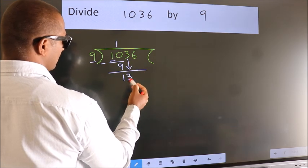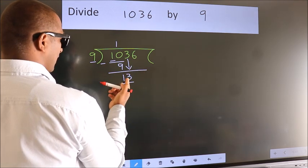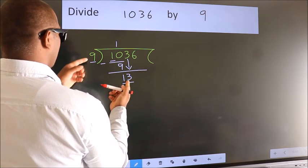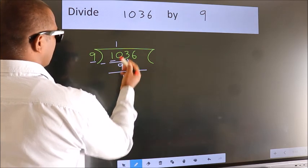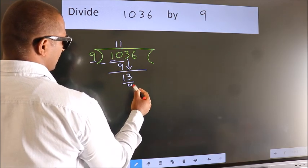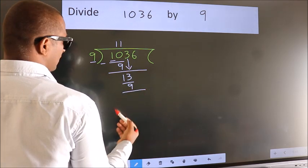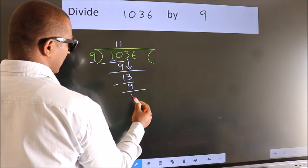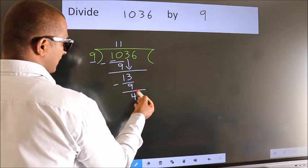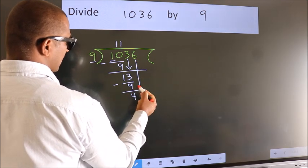3 down, so 13. A number close to 13 in the 9 table is 9 once, 9. Now we subtract. We get 4. After this, bring down the beside number.